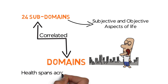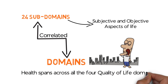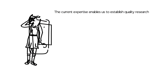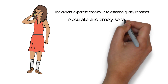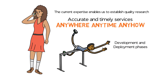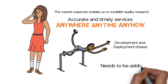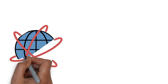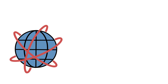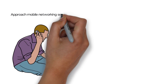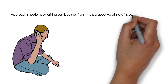Health is an aspect of the individual's life that spans across all four quality of life domains. The current expertise in our quality of life team enables us to establish quality research in mobile networking systems, delivering accurate and timely services to their users anywhere, anytime, anyhow. Many of the challenges in development and deployment phases of mobile networking systems need to be addressed considering not only the system and its underlying objective quality of service, but also the actual system end users, who approach mobile networking services not from the perspective of new hype technology.